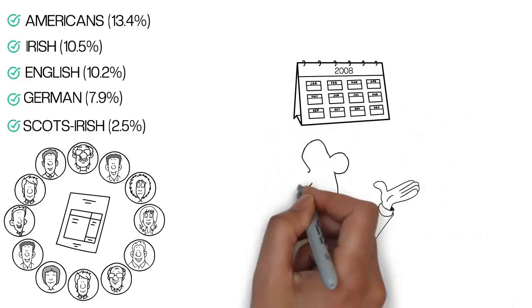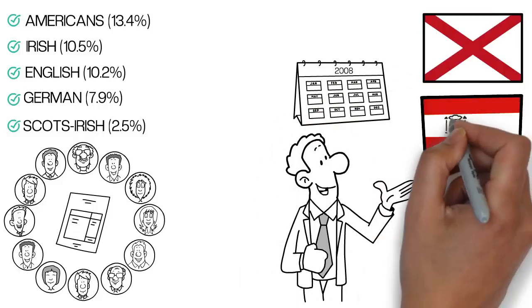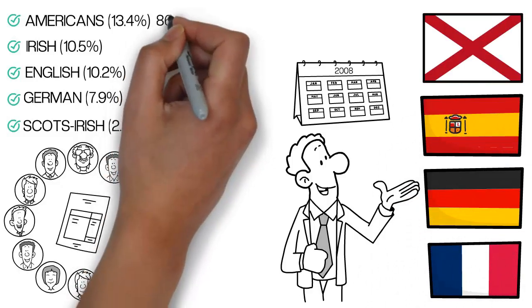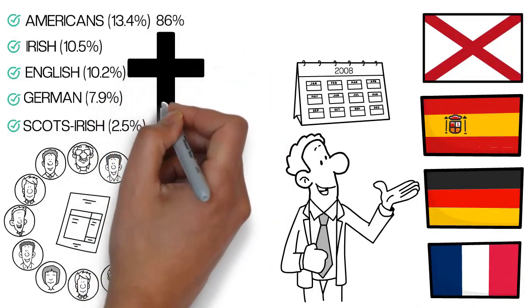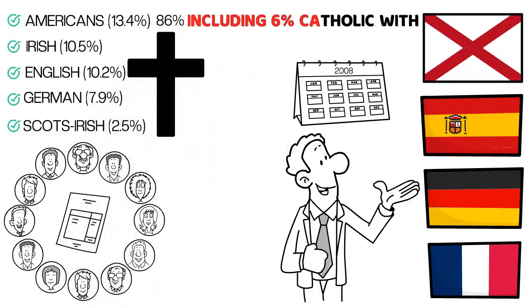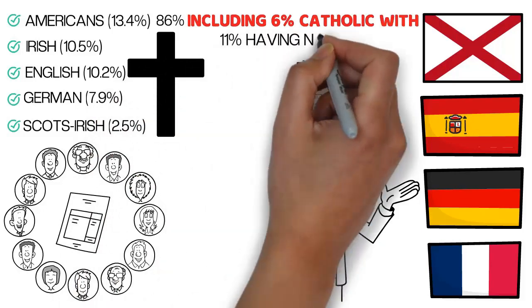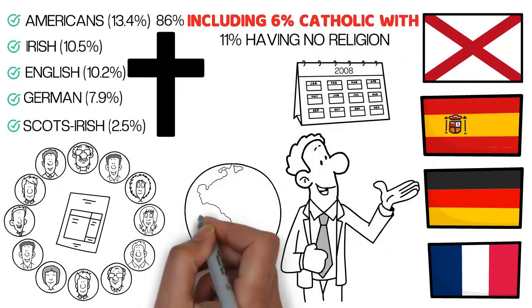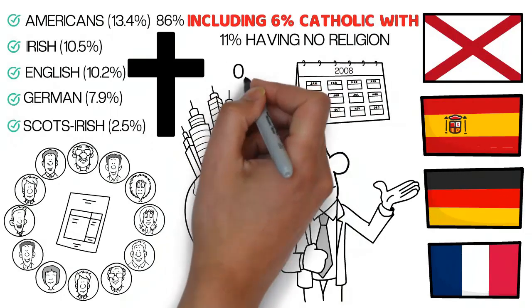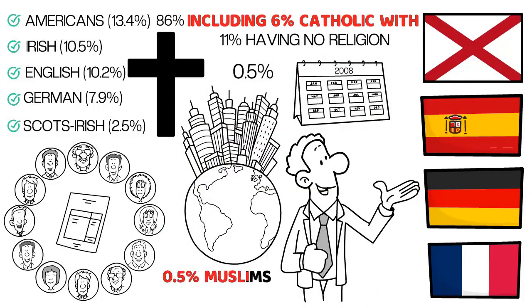The other non-English languages spoken in Alabama are Spanish, German, and French. About 86% of Alabama's population is Christian, including 6% Catholic, with 11% having no religion. The composition of other religions is 0.5% Mormon, 0.5% Muslim, and 0.5% Hindu.